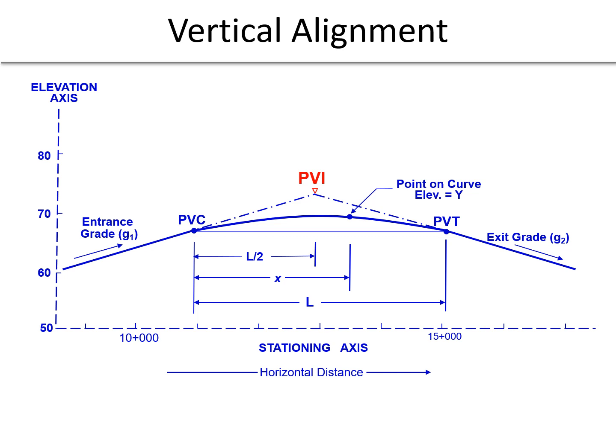The PVI is the point of vertical intersection, this is where the two grades intersect. The PVC is the point of vertical curvature, this is where the roadway leaves the entrance grade and begins to curve, providing that smooth transition from one grade to the next.